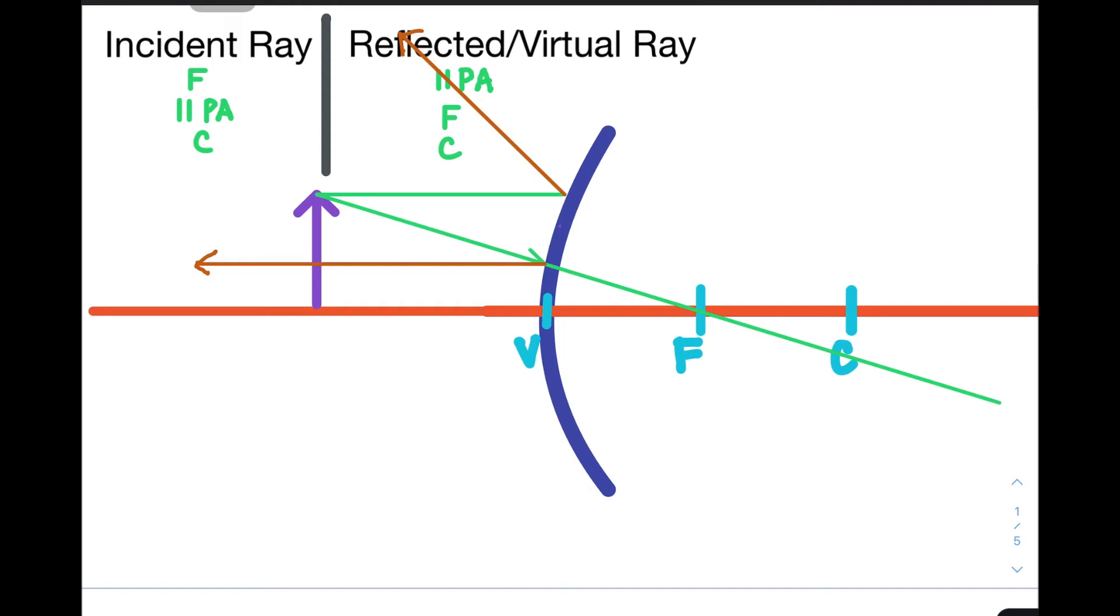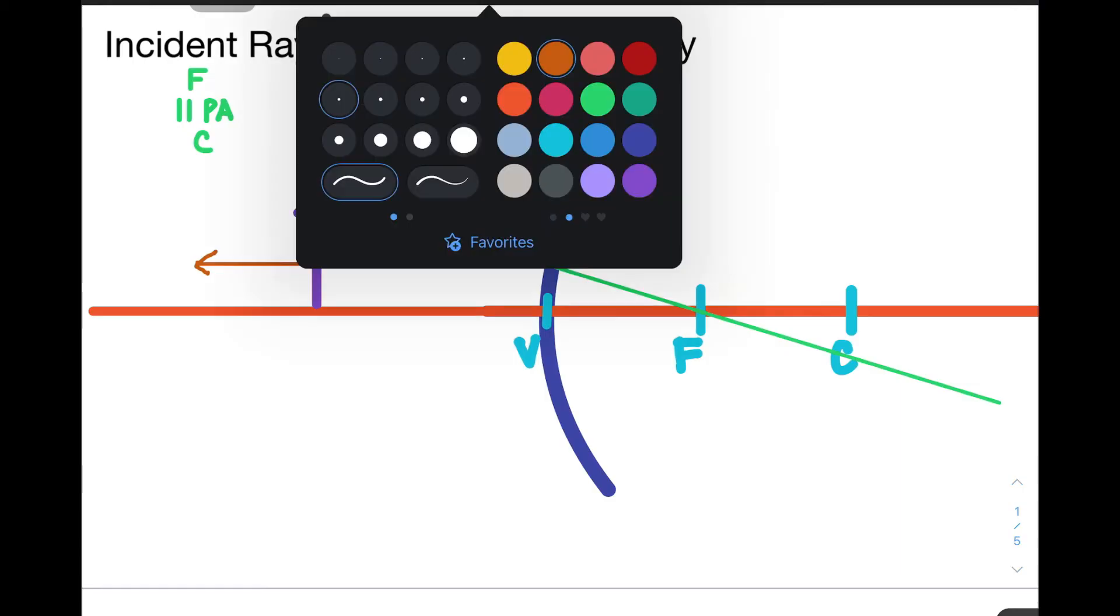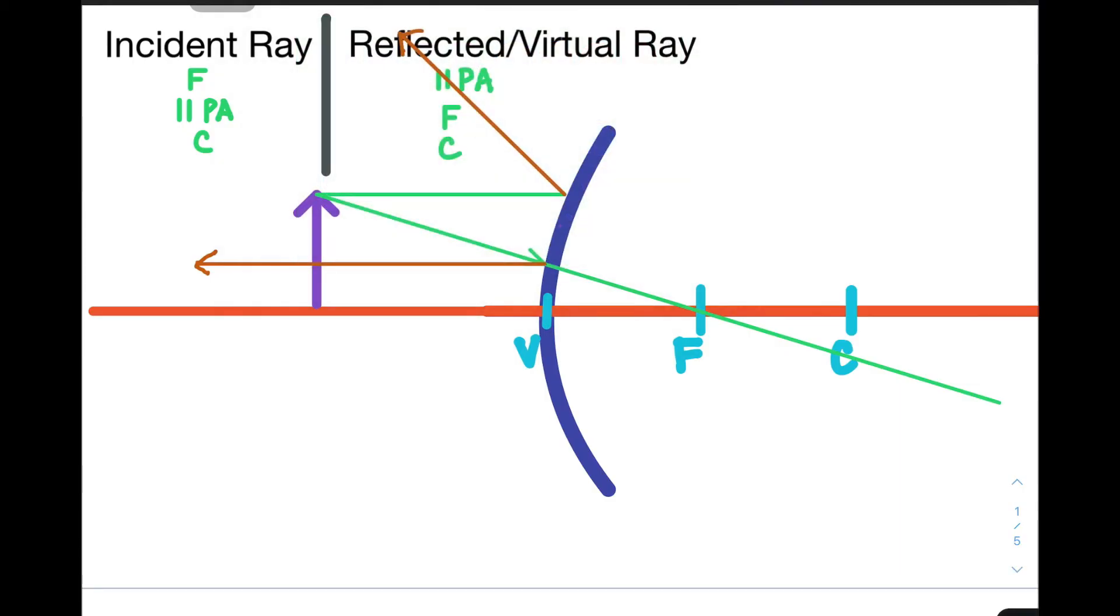And finally, if the incident ray is aligned with the center, it will be reflected back to the center. So, again, let us do the same technique. We extend the line towards the center just like that. And then draw the reflected ray.